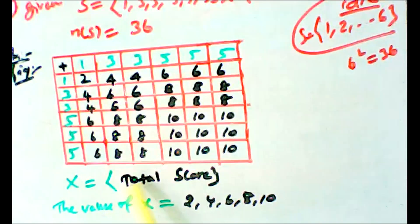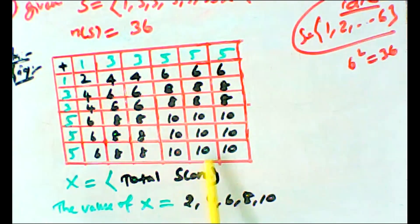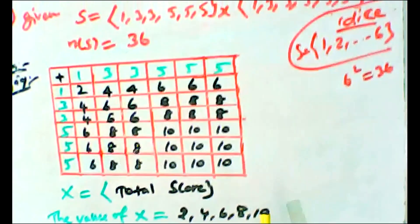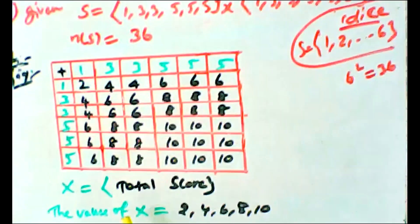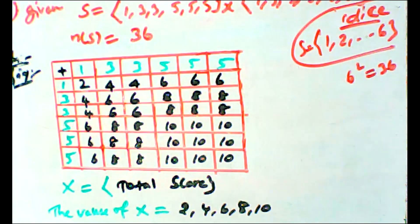Now look at x — we have 8 total scores. The values of x are: 2, 4, 6, 8, and 10. These are all possible values of x. Now we will write the probability mass function.